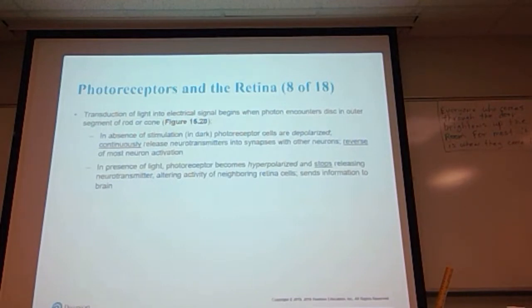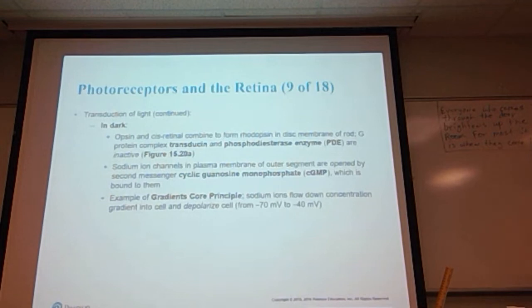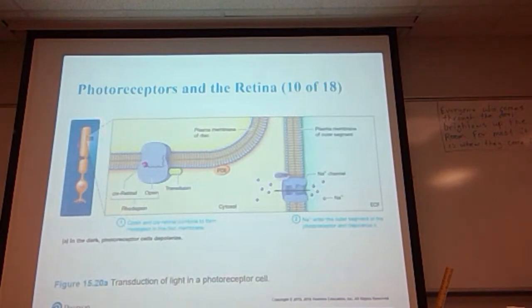In the presence of light, the photoreceptor becomes hyperpolarized and stops releasing neurotransmitters, which alerts the activities of neighboring retinal cells to send information to the brain. In the dark, opsin and cis-retinol combine to form rhodopsin in the disc membrane of the rod. A G-protein complex — transducin — and the enzyme phosphodiesterase (PDE) are inactive. Sodium ion channels in the plasma membrane of the outer segment are opened by the second messenger cyclic GMP (cGMP). Sodium ions flow down the concentration gradient into the cell and depolarize it.